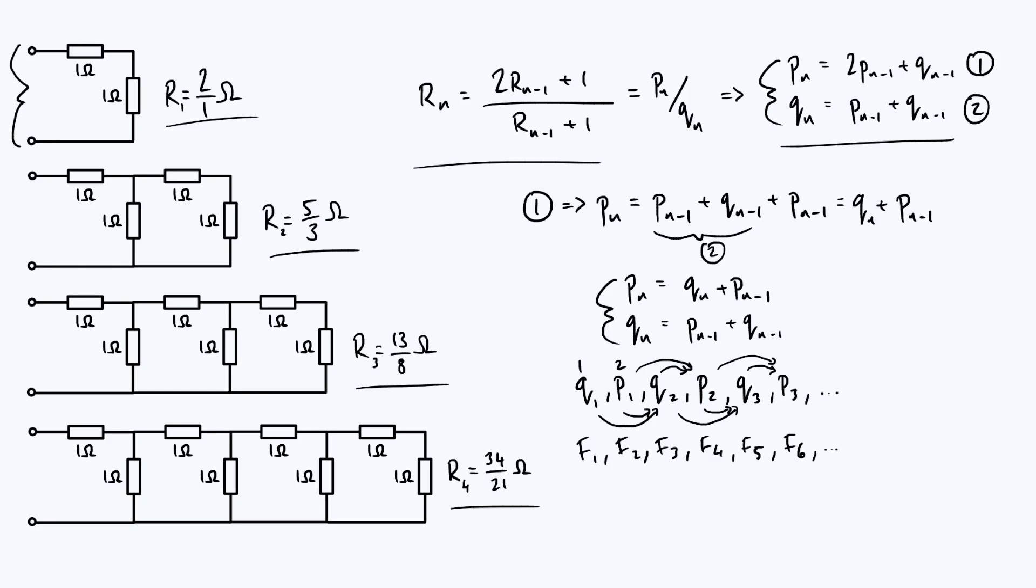But starting from 1 and 2 is a perfectly valid thing to do. So just so that you're aware, there are other conventions for the subscripts of those Fibonacci numbers.